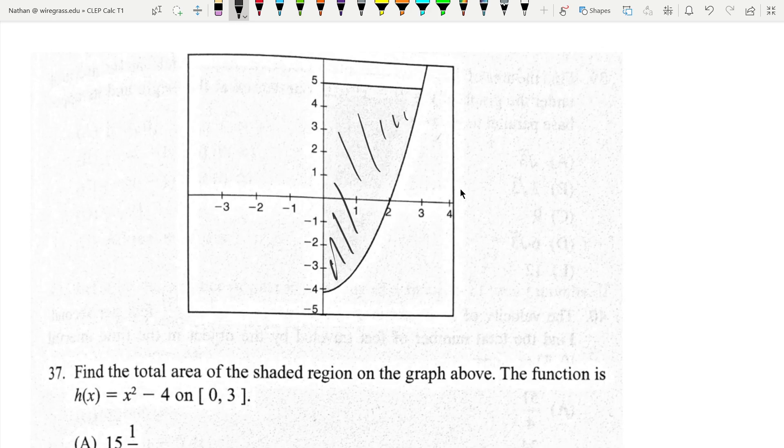It's given us the function. This function here is x squared minus 4, and this is just a constant 5. It's on the interval 0 to 3.